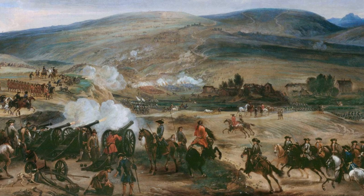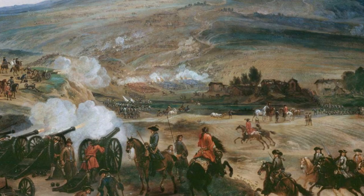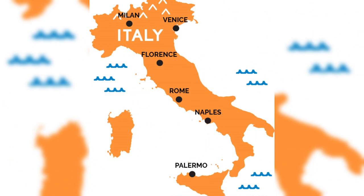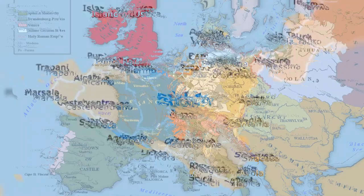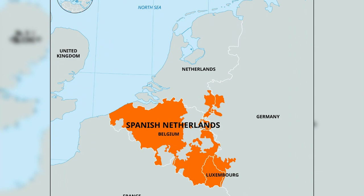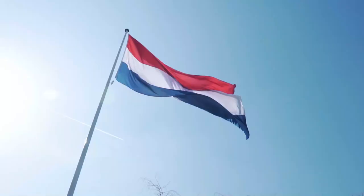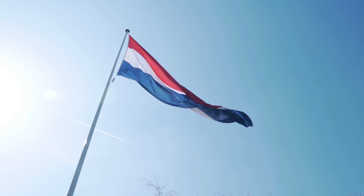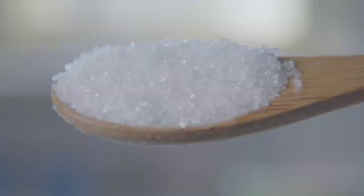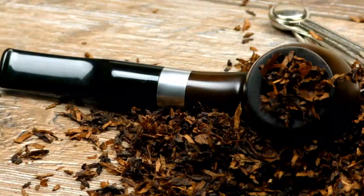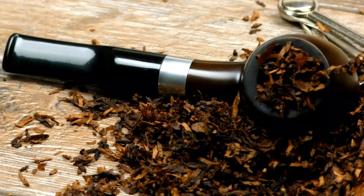Spain's territorial possessions were a linchpin in the global balance of power. Holding territories in Italy such as Naples and Sicily meant controlling vital Mediterranean trading routes — something of great interest to the Holy Roman Empire and its Austrian Habsburgs. Additionally, the Spanish Netherlands was a wealthy and strategically located region whose control could severely disadvantage England and the Netherlands in terms of European trade. Even beyond Europe, Spain's colonies in the Americas were legendary for their wealth, being sources of precious metals and valuable commodities like sugar and tobacco. The prospect of these vast territories falling under a single Bourbon dominion led to heightened tensions and a flurry of diplomatic activity.